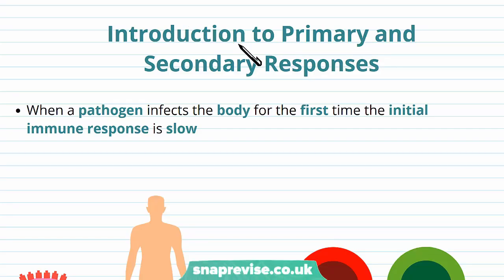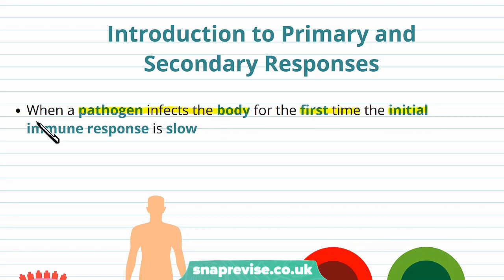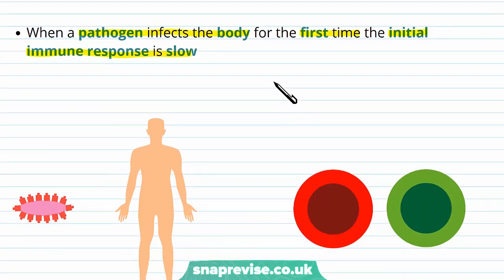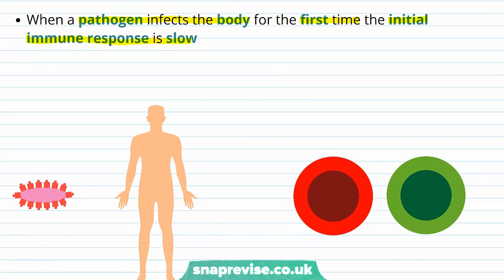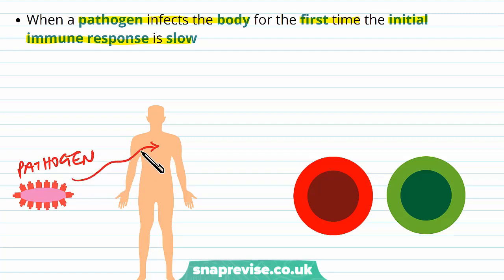The primary and secondary immune responses both refer to the fight against a pathogen invading the body. When a pathogen first infects the body for the first time, the initial immune response is quite slow. The reason for this is because we haven't seen the pathogen before — it's a new pathogen with new antigens which has somehow passed our innate or basic nonspecific immune system and invaded into the body.